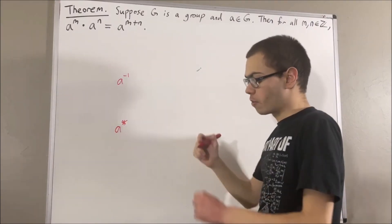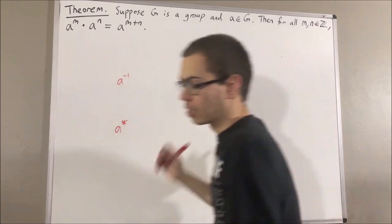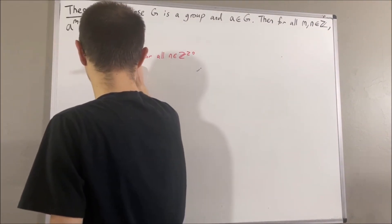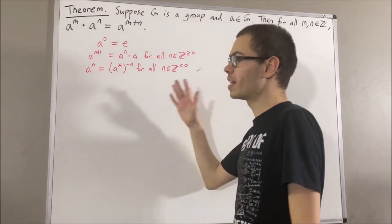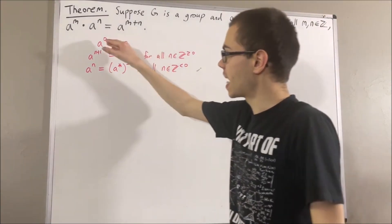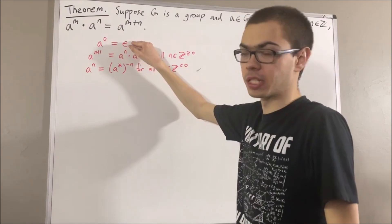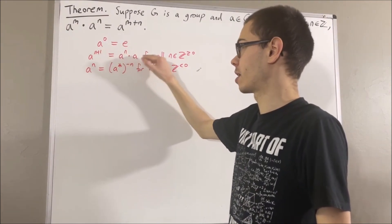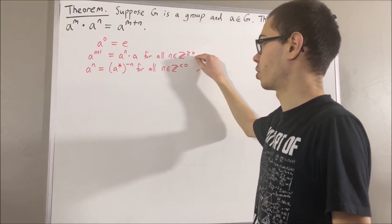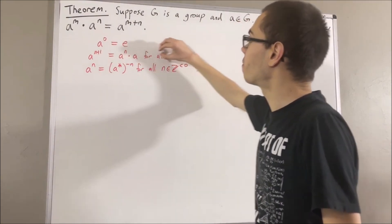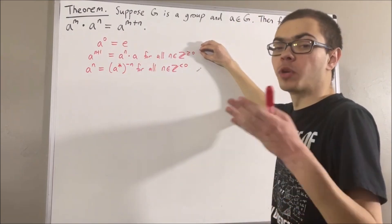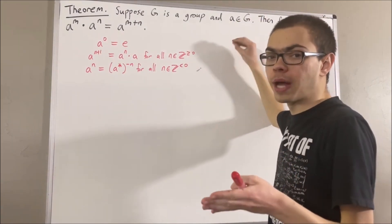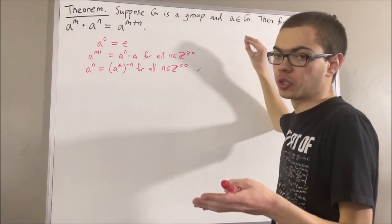So now, here's how we define integer exponents for elements in a group. Given any group element A, A to the 0 is the identity element of the group. A to the N plus 1 is equal to A to the N times A, for all integers N greater than or equal to 0. These first two lines describe recursively how we can take any group element and raise it to the power of an integer greater than or equal to 0.